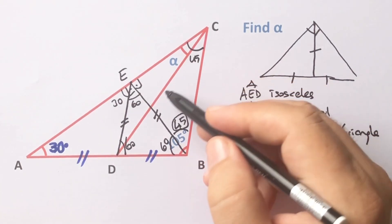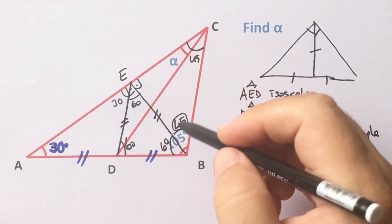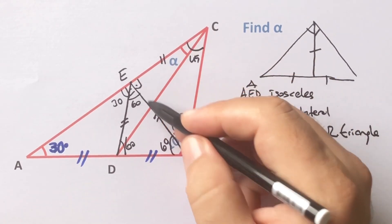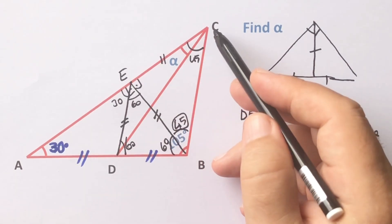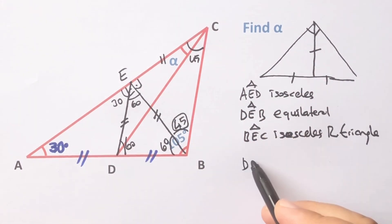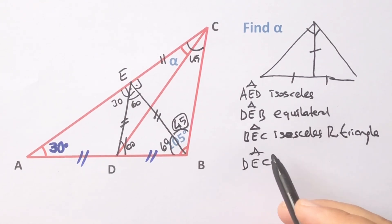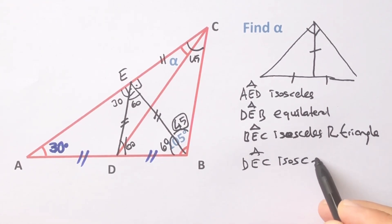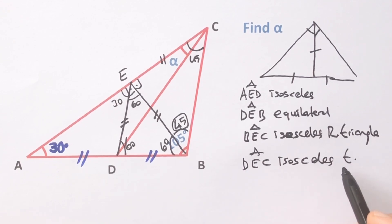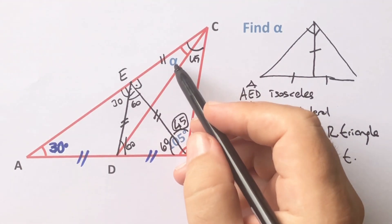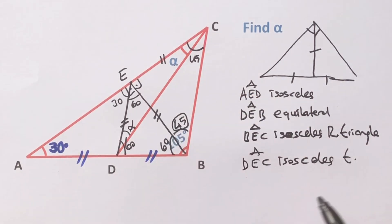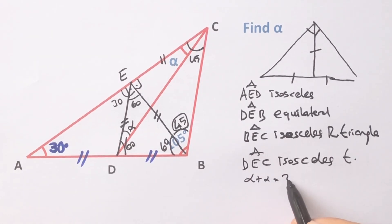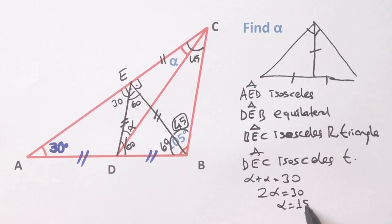Therefore, the length opposite 45 degrees must be equal to others. If you focus on triangle DEC, it is also an isosceles triangle. So the two 30-degree angles are equal, and therefore alpha is going to be 15 degrees.